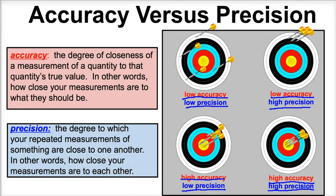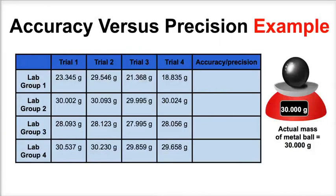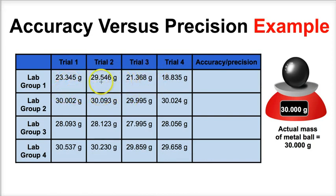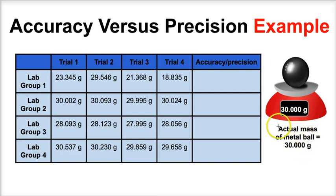Let's apply the concept of accuracy versus precision to a set of data. Suppose we have four different lab groups, and each lab group has made four different trials measuring a metal ball on a digital scale. The teacher has measured this metal ball and determined that the actual mass of the metal ball is 30.000 grams. This represents the actual mass or the true value.